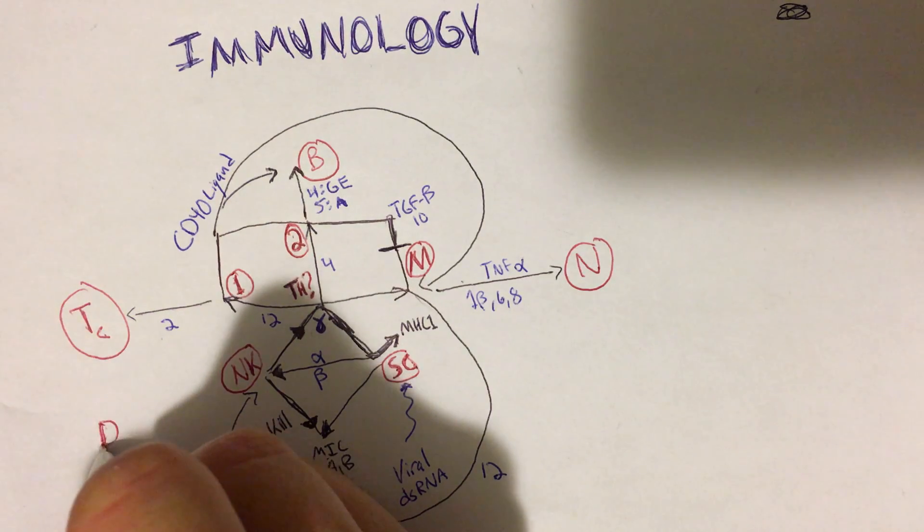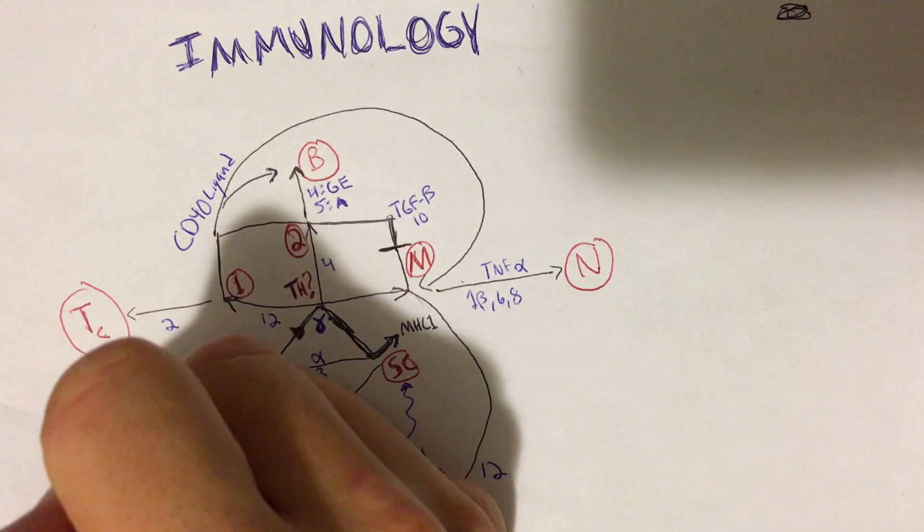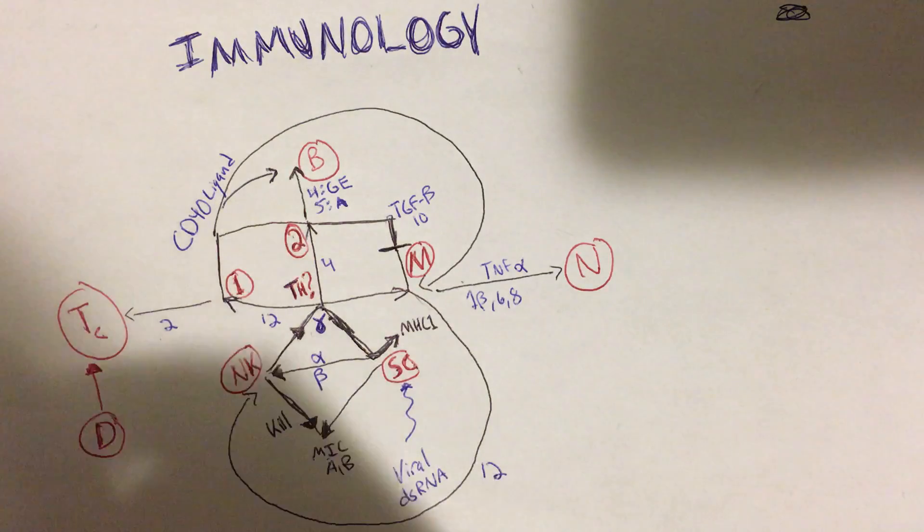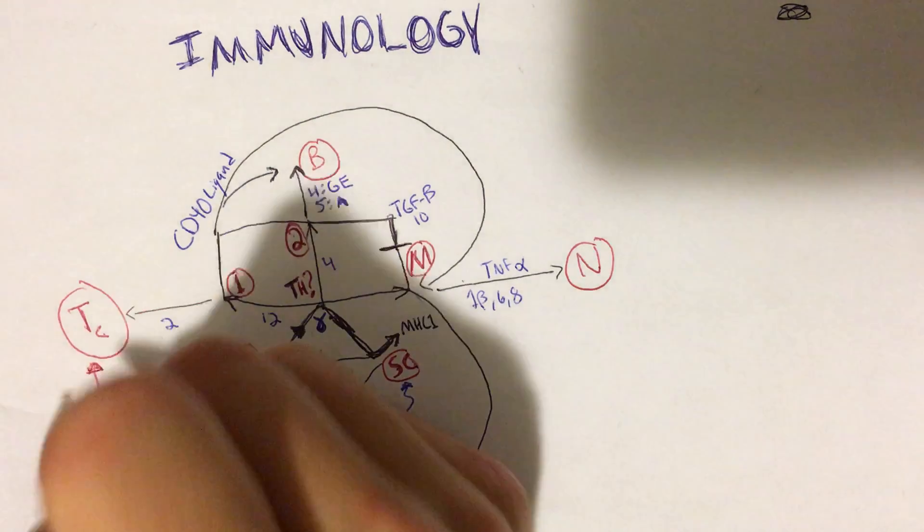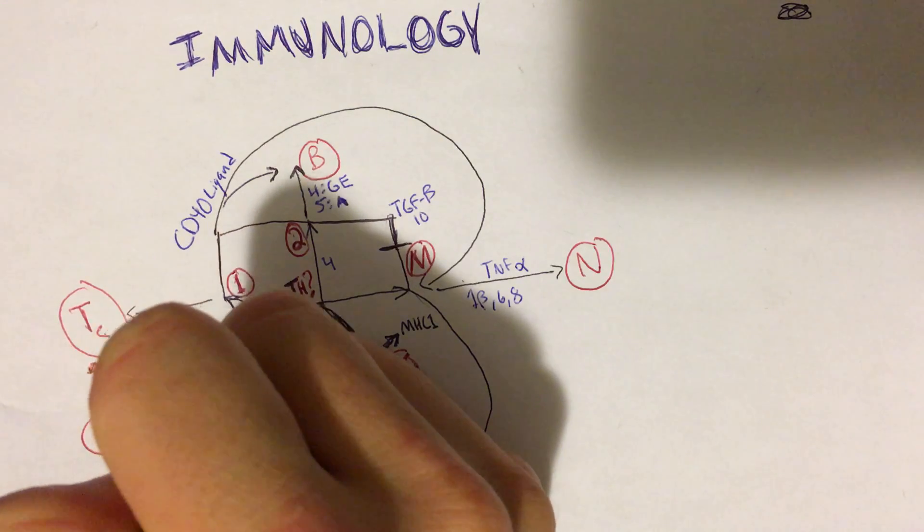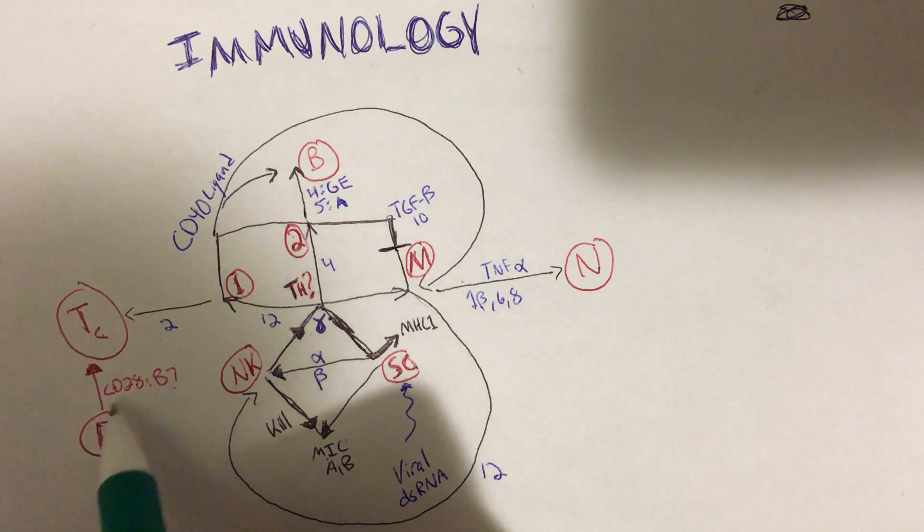And last but not least, something that was left out here that I do want to draw in, because we didn't talk about this cell's - the dendritic cell right here. It moves - it samples and then it moves to the lymph node and it activates the cytotoxic T cell. And it does so via, well, the T cell has CD28 and the dendritic cell has the B7 on it.